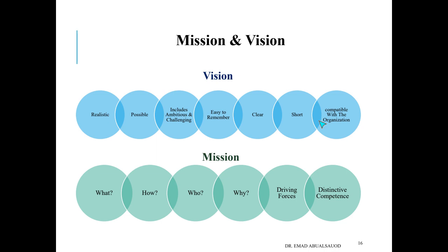Since Google was established, they've already achieved that vision. Disney, the big entertainment company, has the vision statement: 'to make people happy' — as simple as that. And if you apply all seven characteristics, you can see it's applicable, realistic, it includes a challenge, and it's easy to remember. IKEA's vision is 'to create a better everyday life for many people,' and Instagram's is 'capture and share the world's moments.' These are good examples of vision statements.